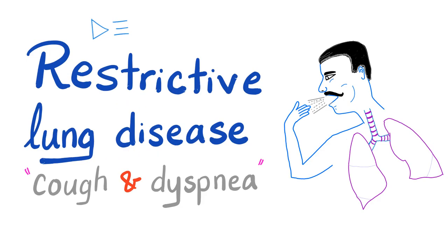Restrictive lung disease: my lungs are restricted from filling, I cannot get the air in. Symptoms: cough and dyspnea, also known as SOB, which stands for shortness of breath. With that being said, let's get started.